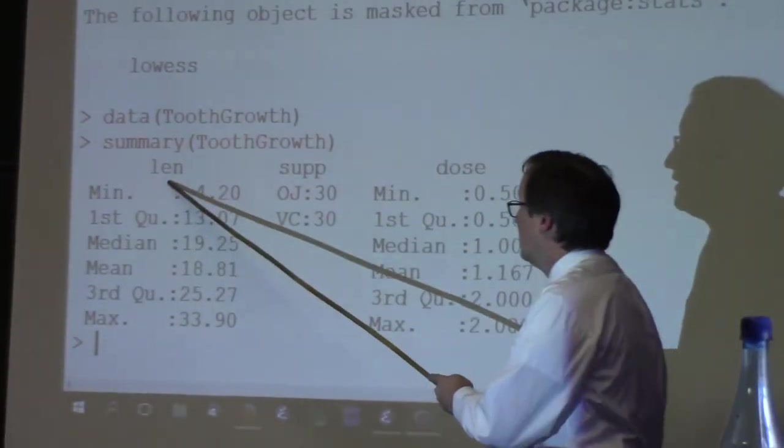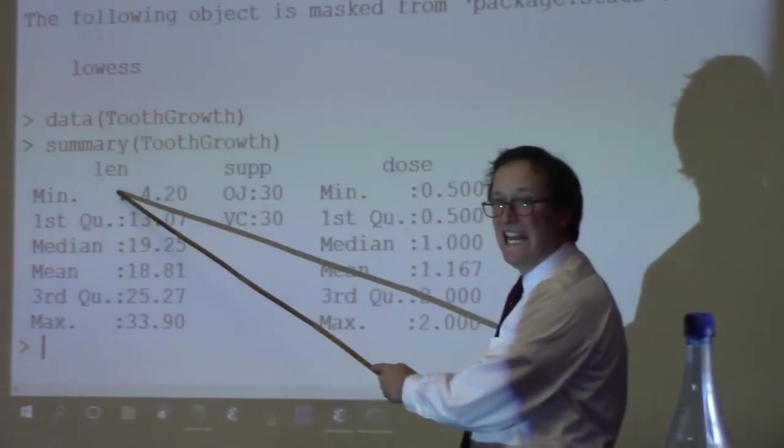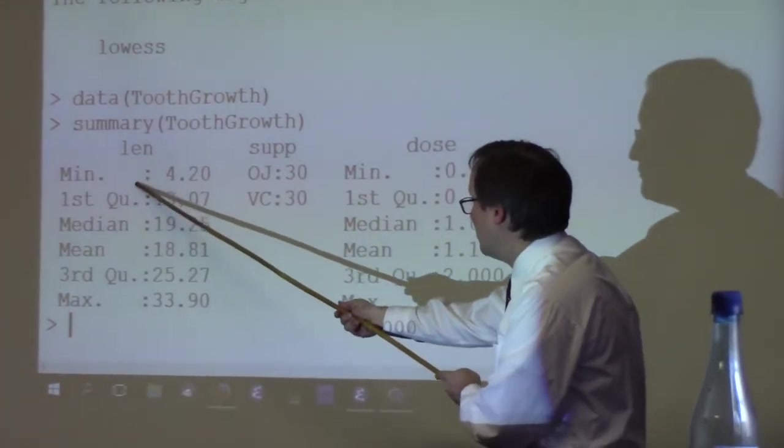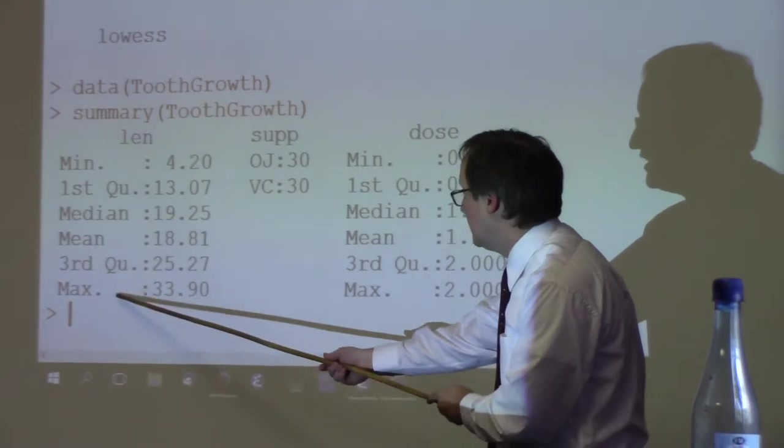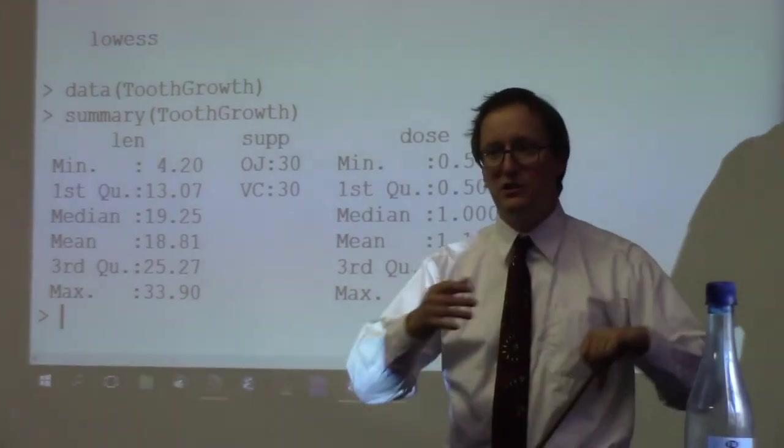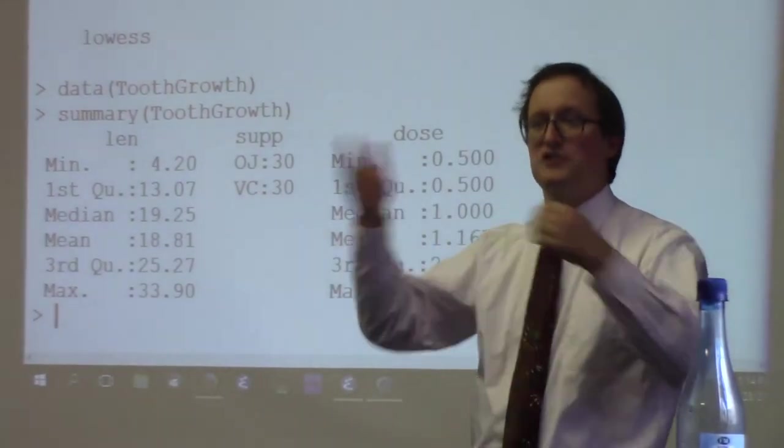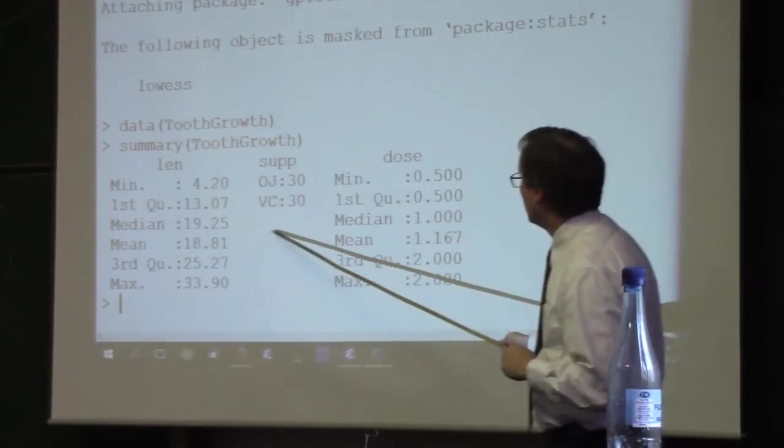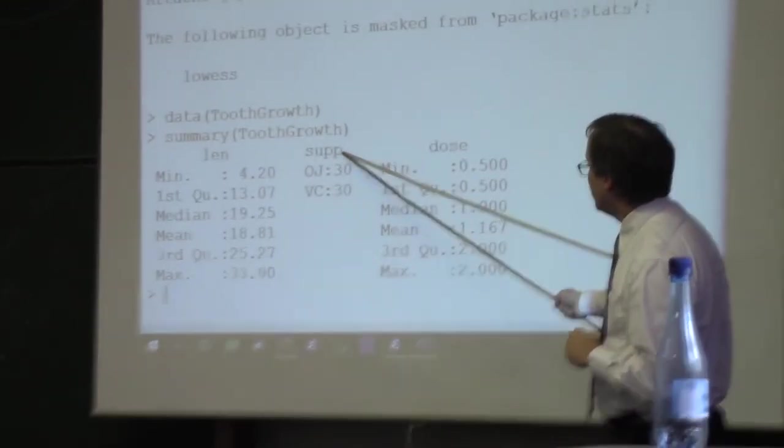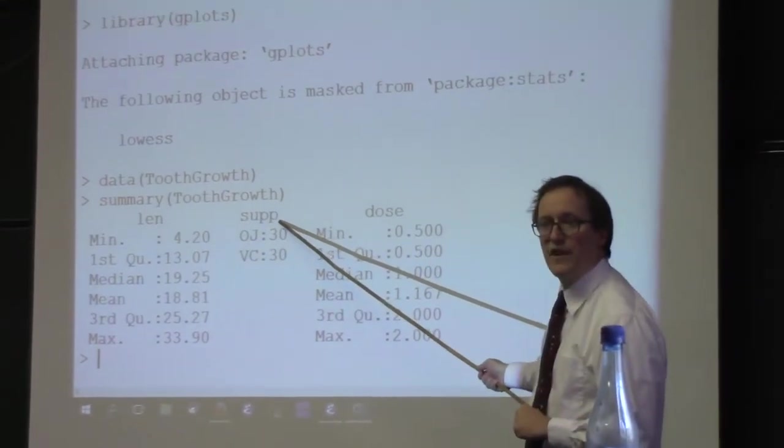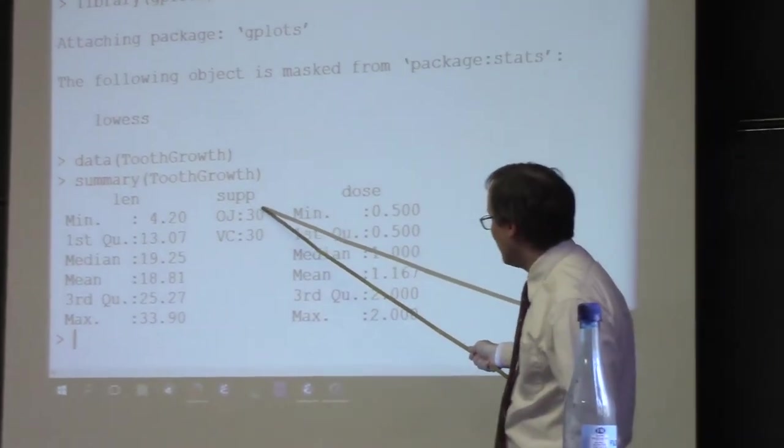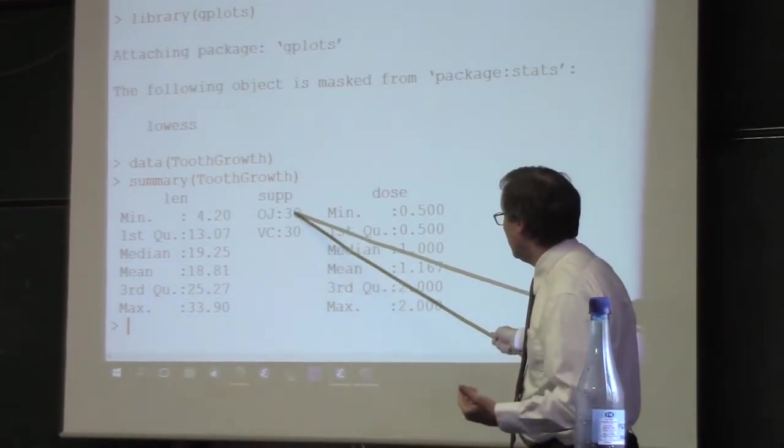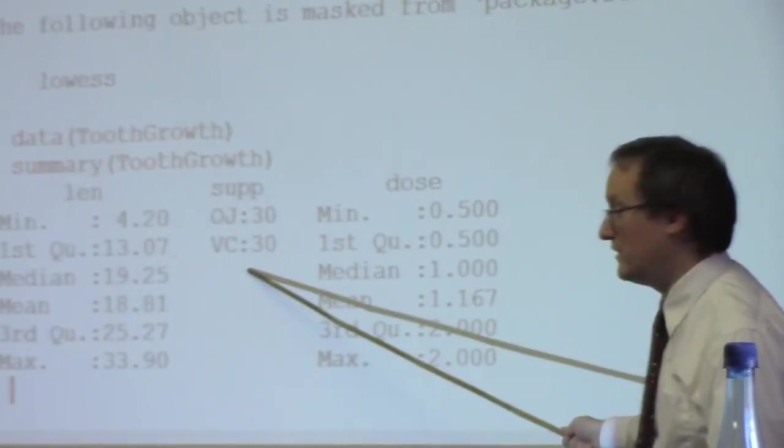We see that we have a field called length for length, so the amount of growth. We've got a minimum, a first quartile, a median, a mean, third quartile, maximum values. These are standard ways to describe this distribution of data represented by the length vector. We have two different kinds of sub-values. We have a total of 60 points in this document and they either fall in the OJ category or the VC category.